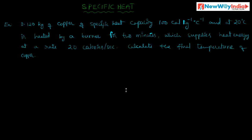Let us discuss a numerical problem on specific heat. What is given in the problem? 0.120 kg of copper of specific heat capacity 100 calories per kilogram per degree centigrade, at 20 degree centigrade, is heated by a burner for 2 minutes which supplies heat energy at a rate of 20 calories per second. Calculate the final temperature of the copper.